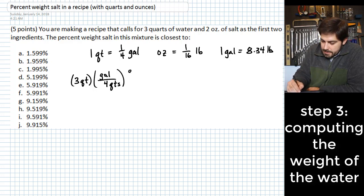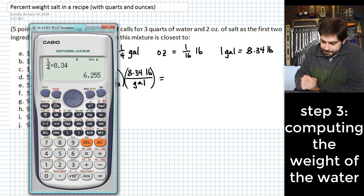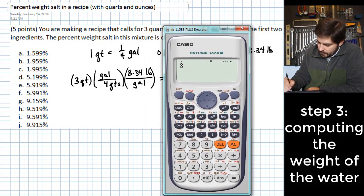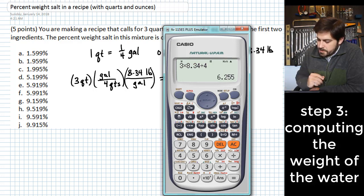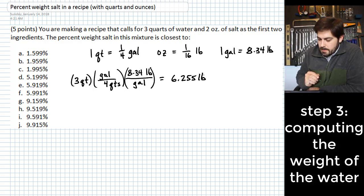If I multiply this by 8.34 pounds per gallon, then what I end up with in this expression is an amount of weight that I have for those three quarts of water. So three times 8.34 divided by four, which is 6.255 pounds.